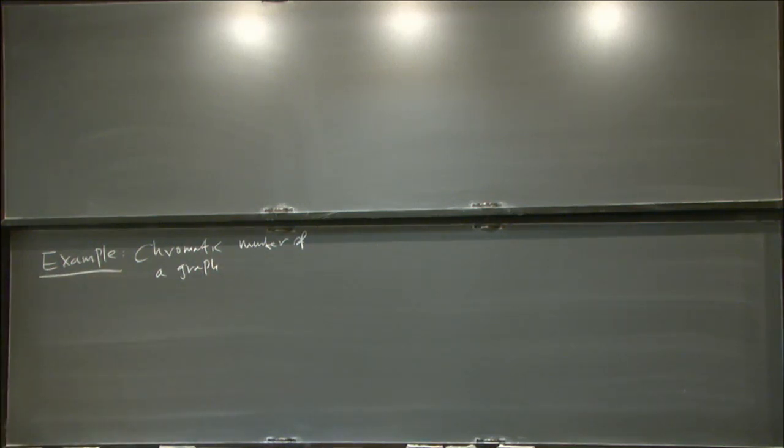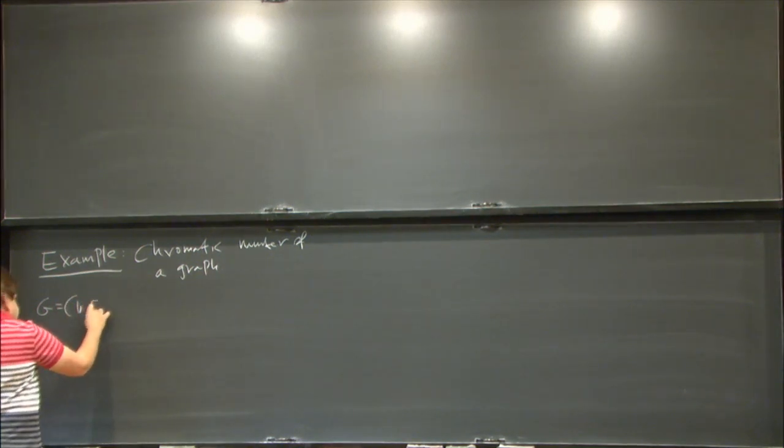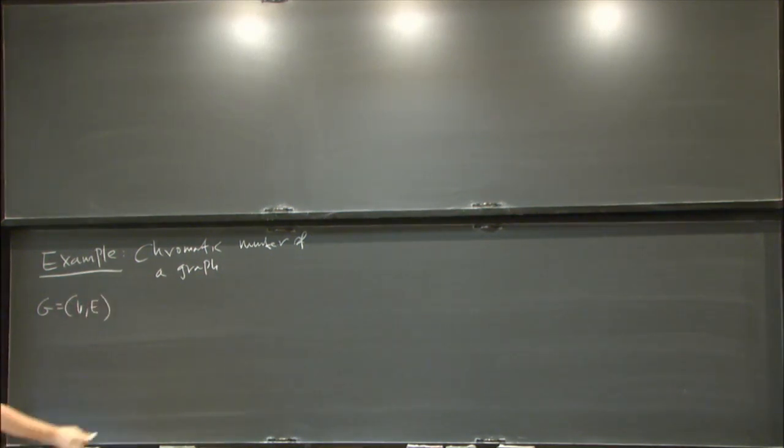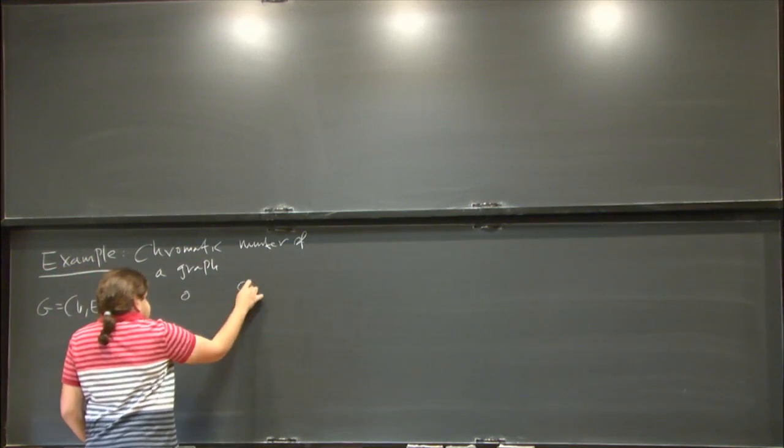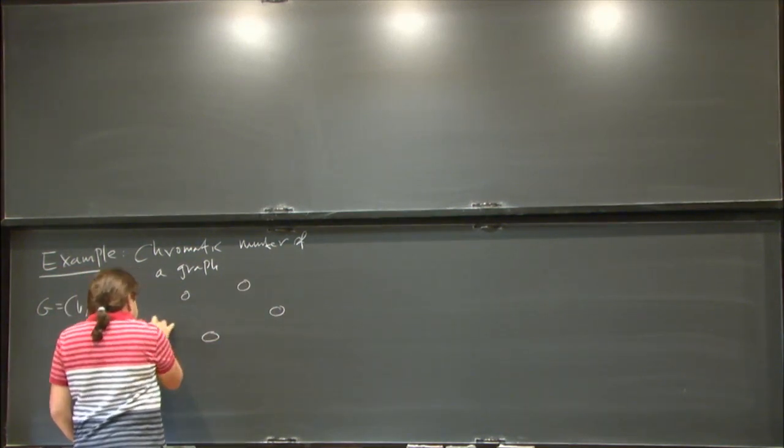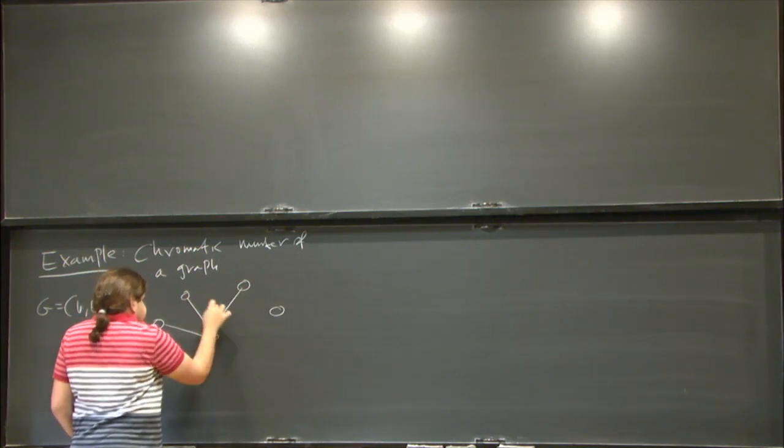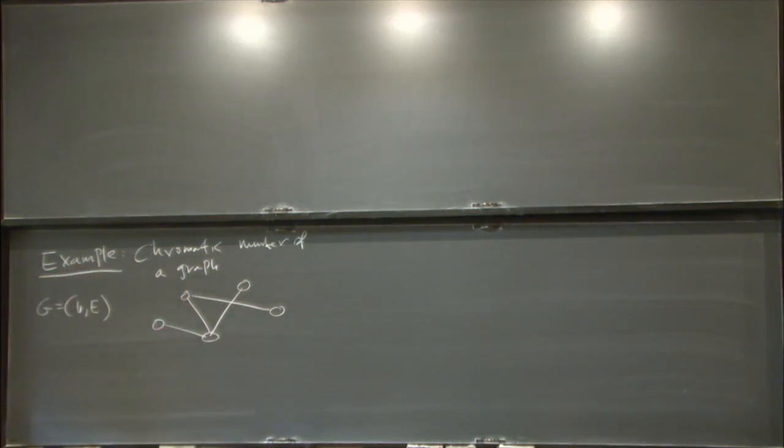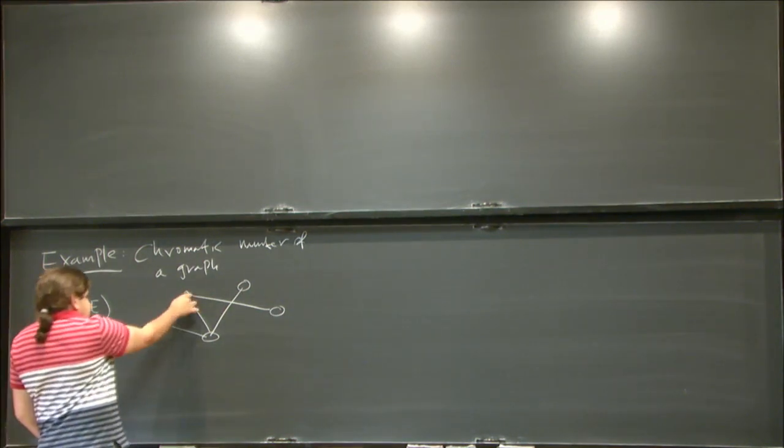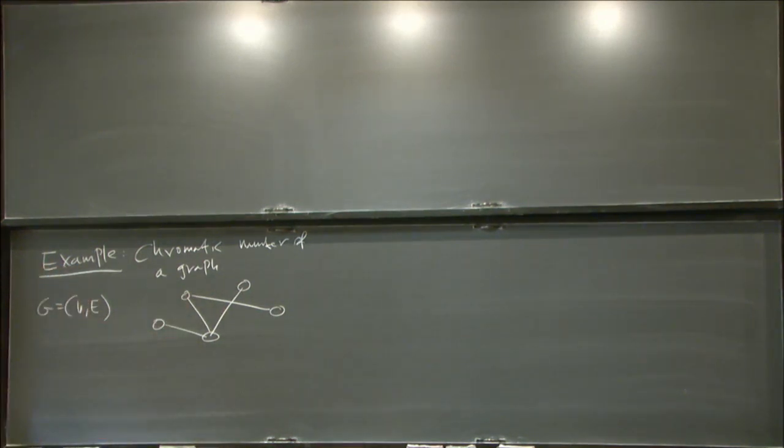So, here is the problem. I give you a graph, which is basically a set of vertices and connections between them. And I ask you to color these vertices in the least number of colors, such that there is no monochromatic edge.